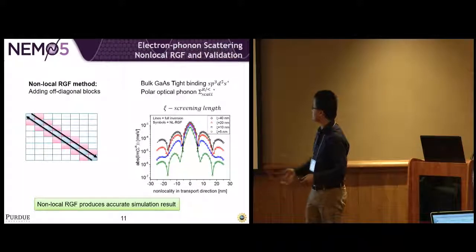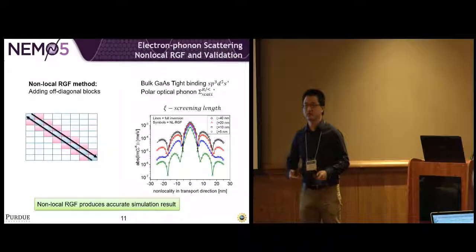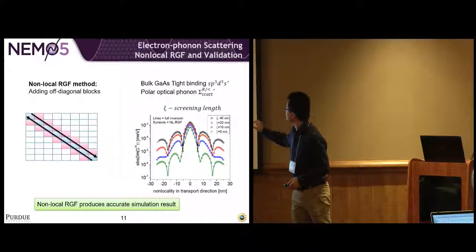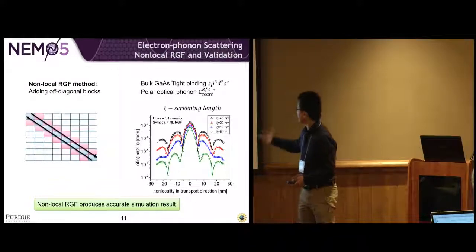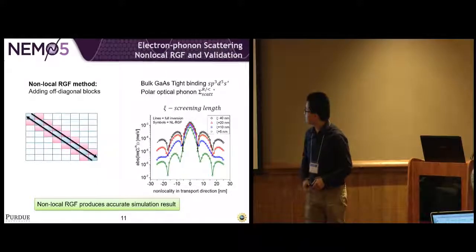The red figure shows model validation. The solid line is the result from the full inversion, and the symbols—the dots, the squares, the triangles—are the simulations from the non-local RGF method. We can see they actually match very well.